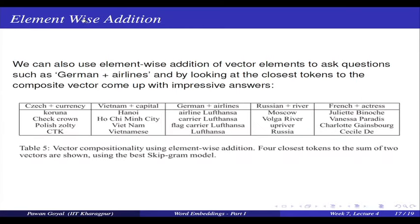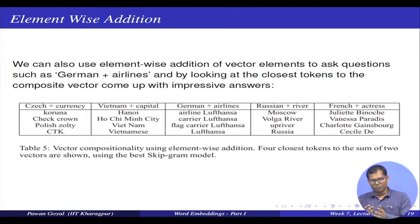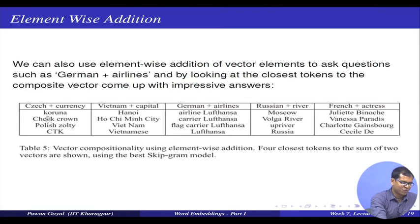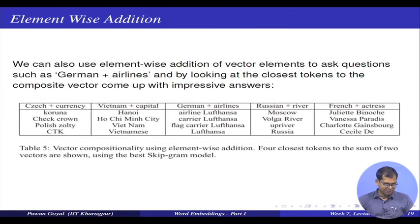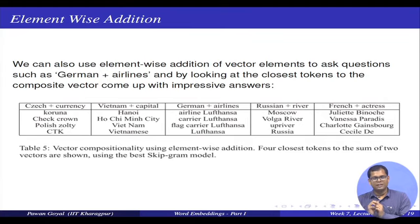Similarly, you can do element-wise addition. Suppose you have the embedding for German and the embeddings for airlines. If you add these two embeddings and find out words closer to the new vector, you find interesting words. Like: Czech plus currency gives relevant words; Vietnam plus capital gives relevant words; German plus airlines gives Lufthansa airline and Lufthansa carrier; Russian plus river gives words like Moscow; French plus actress gives some French actresses. This was again an interesting aspect — you can take embeddings of two words, add them together, and find something that is a composition of the two. It is not a generic method; this came out in some cases and may not be true for all cases, but even that was an interesting observation.